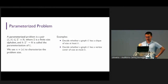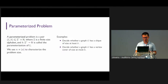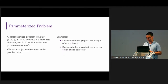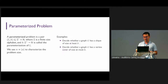In parameterized complexity, we study the following parameterized problem. We take the original problem L, and we also have a function k from Sigma-star to the natural numbers, which we call a parameterization of problem L. For example, deciding whether a graph G has a clique of size at least k — here G is the original problem and k is the parameterization. Similarly, deciding whether a graph G has a vertex cover of size at most k is a parameterized version of the vertex cover problem.